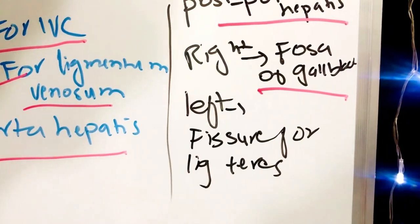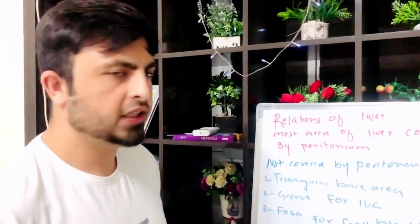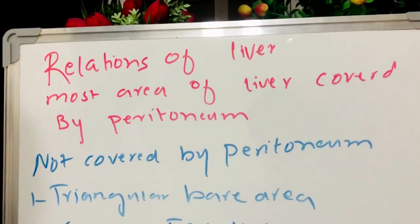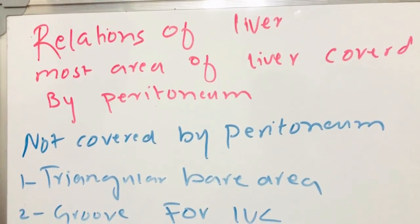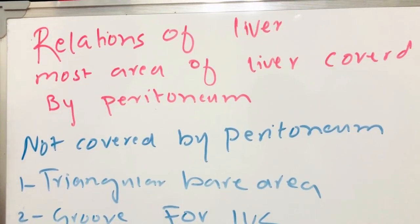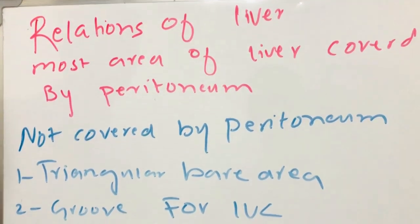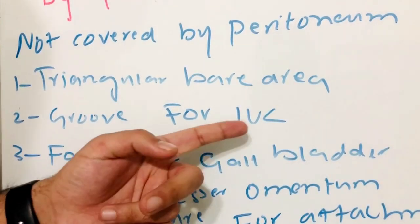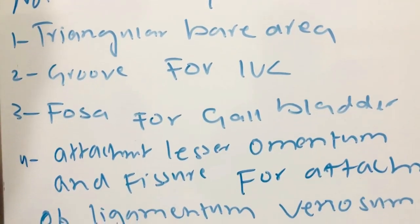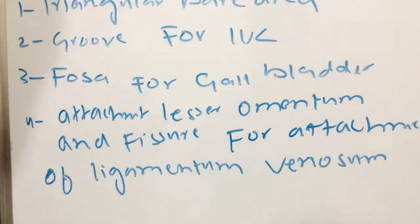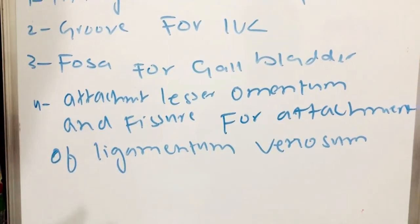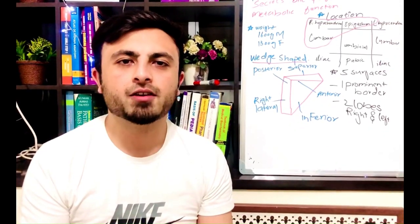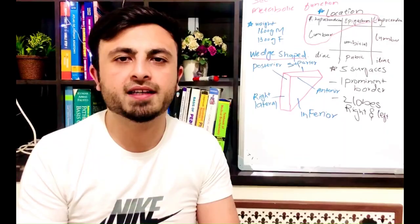Regarding the relations of the liver: most of the area of the liver is covered by peritoneum, but the parts not covered by peritoneum are the triangular bare area, the groove for inferior vena cava, the fossa of the gallbladder, the attachment of the lesser omentum, and the fissure for the ligamentum venosum. Thanks for watching — in the next video we will discuss the anatomy of the pancreas.